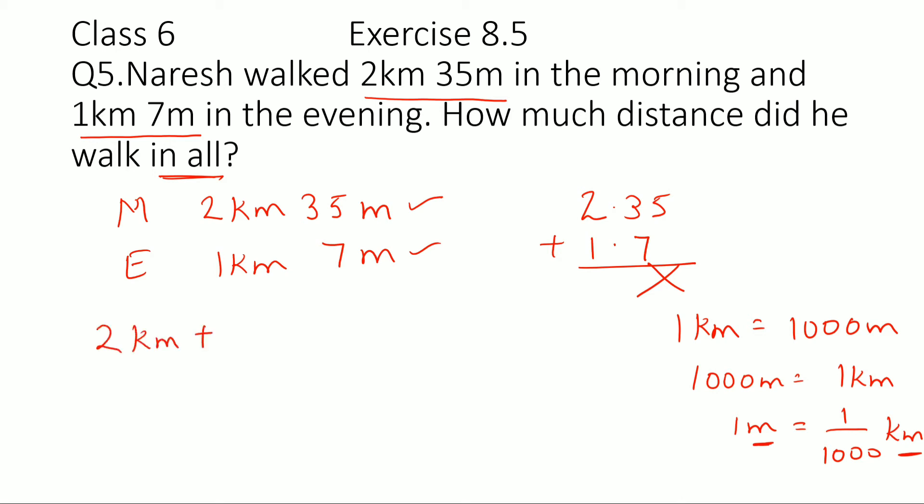So the first one is 2 kilometer plus 35 divided by 1000 kilometer. So this would be 2 point—because there are 3 zeros, so the point would shift 3 places to the left—it will be 0.035 kilometer.